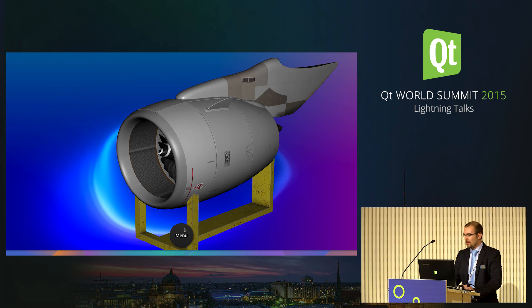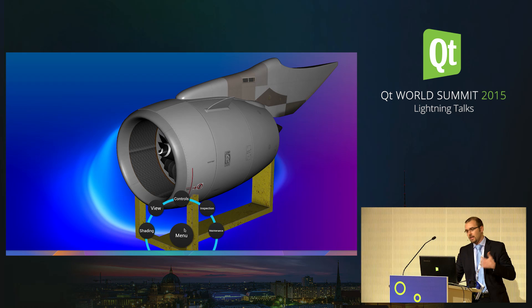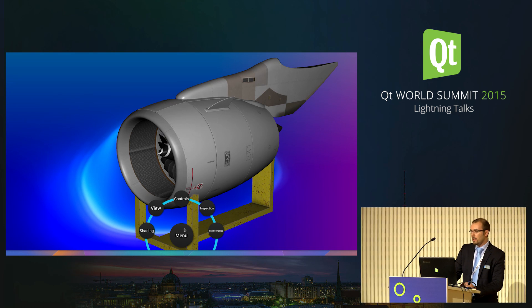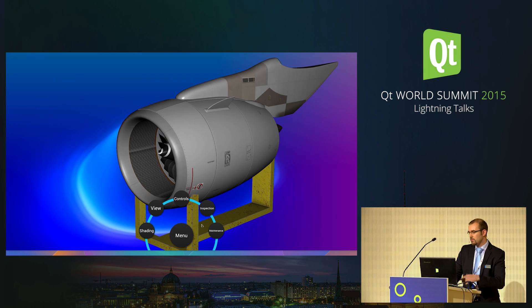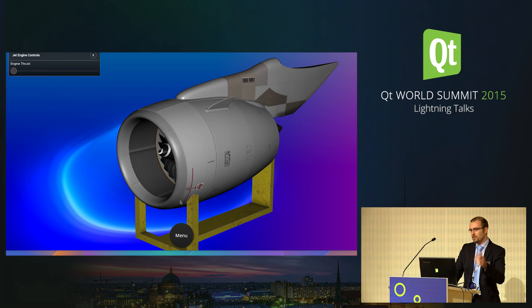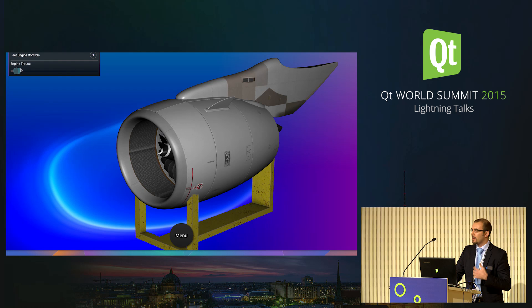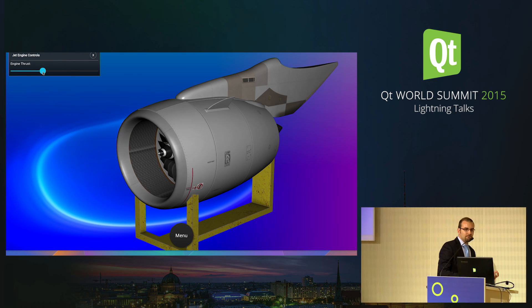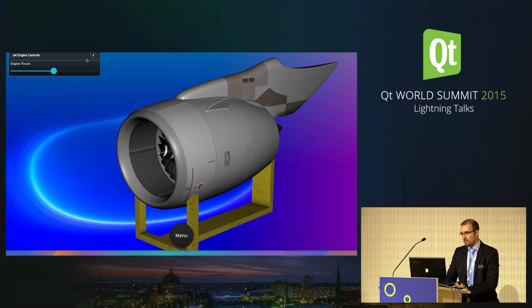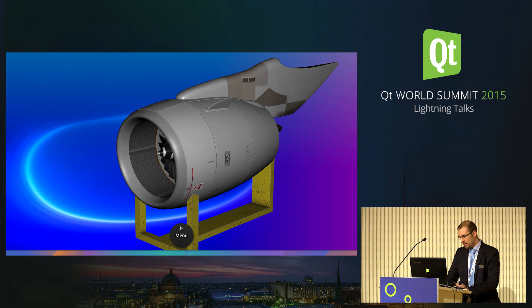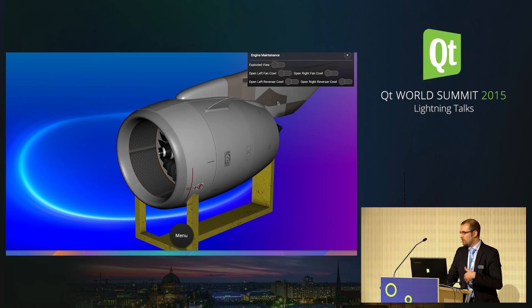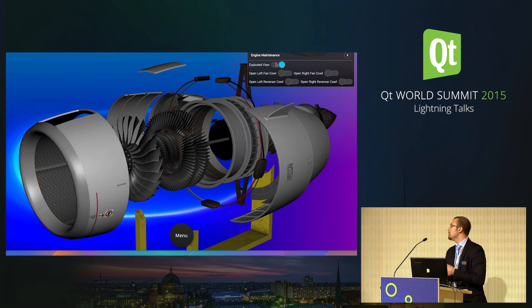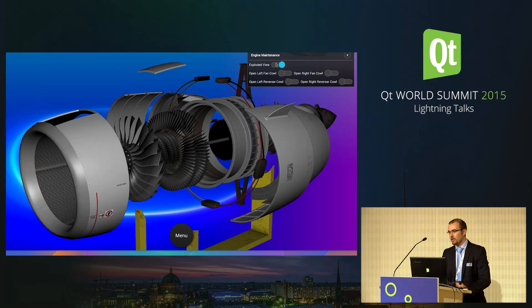We've got 3D content and a small 2D UI panel that we can use — the menu panel — and then we can interact with the 3D object. When I click on a button I open a small 2D panel and get access to sliders and other Qt Quick panels. We can start our engine, ready for takeoff.